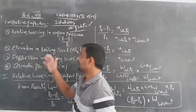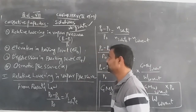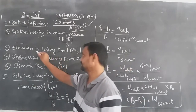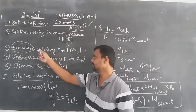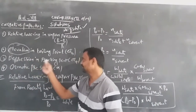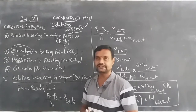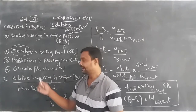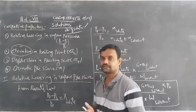The first colligative property is the relative lowering in vapor pressure, indicated as (P₀ − Ps)/P₀. The second is the elevation in boiling point, indicated as delta Tb — elevation means increase in boiling point. Third is the depression in freezing point, delta Tf — depression means decrease in freezing point. The fourth is osmotic pressure, indicated with the symbol pi. These are the four types of colligative properties.